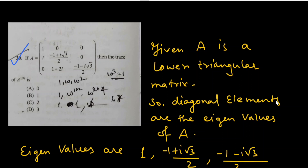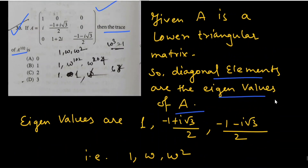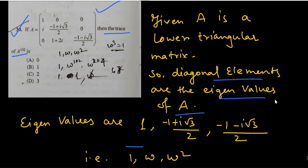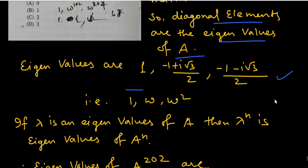The first question: given matrix A, find the trace of A to the power 102. Since A is a lower triangular matrix, the diagonal elements are the eigenvalues. Therefore the eigenvalues are 1, (−1 + √3 i)/2, and (−1 − √3 i)/2, which are simply 1, ω, and ω².